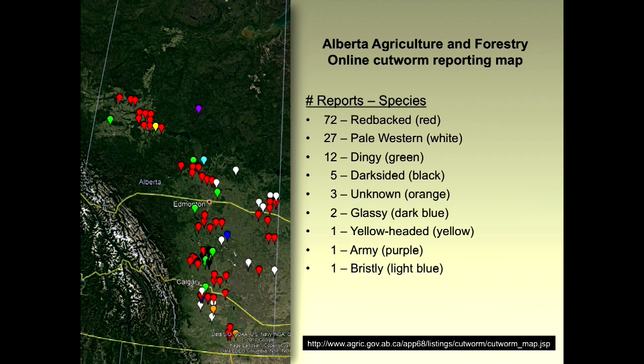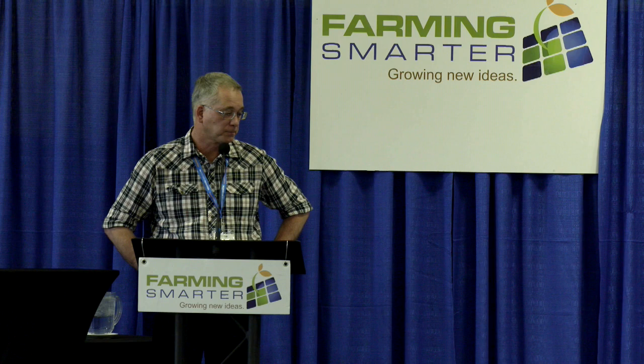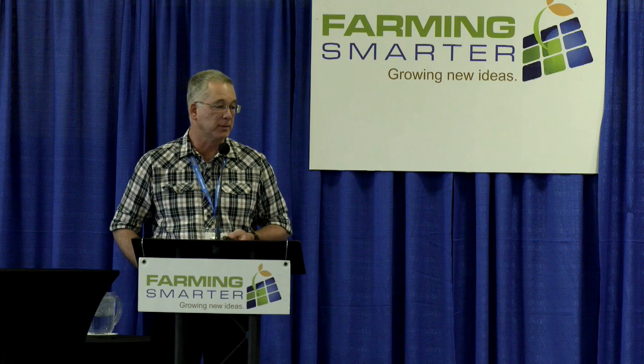Looking at species associated with the 124 reported outbreaks: the most common is redback cutworm, then pale western cutworm, and dingy cutworm. Redback cutworm can affect acres anywhere in the agricultural area of the province. Dingy cutworm spans the full agricultural area as well. Pale western cutworm so far has not been reported causing outbreaks in the Peace River region, but south of Edmonton to the border it's a problem. As more people add data in 2018 and 2019, we can better develop patterns and advise on minimizing damage.